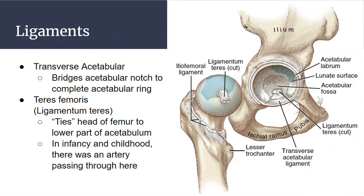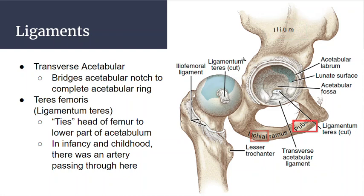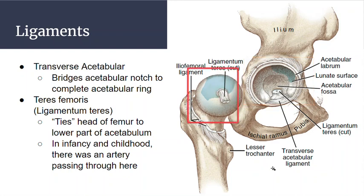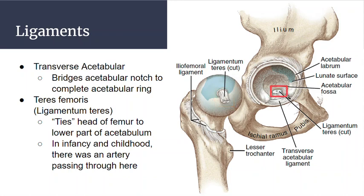Looking at the os coxa, we have the ilium, ischium, and pubis — three bones that merge into the acetabulum. Then we have the femur and the femoral head that goes into the acetabulum. We have the transverse acetabular ligament down here, which completes the acetabulum. Then we have the ligamentum teres, which is cut here and goes from the fovea capitis into the center of the acetabulum.